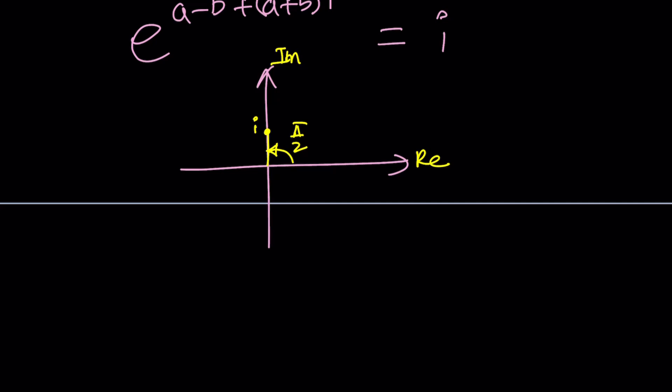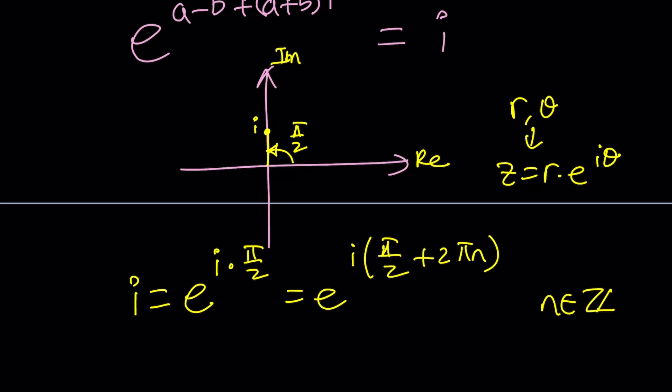So what does that mean? It just means i can be written as, by the way if you know r and theta for a complex number you can basically write it as r times e to the i theta and in this case r is one so we can write it as e to the power i times pi over two but again pi over two is just the principal value you can also just write this as i times pi over two plus two pi n where n is an integer.